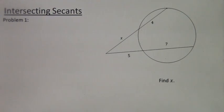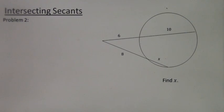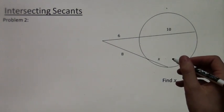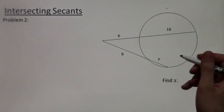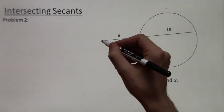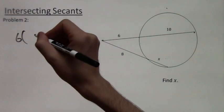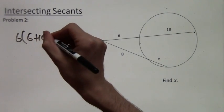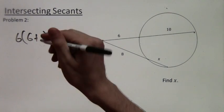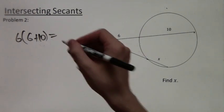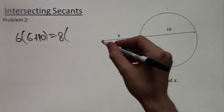Alright, we're ready for the next example. Here we want to find x again. We apply the theorem because we have these two secants intersecting on this point outside. And we have 6 times 6 plus 10 equals, and then short outer portion, 8 times the entire secant, 8 plus x.